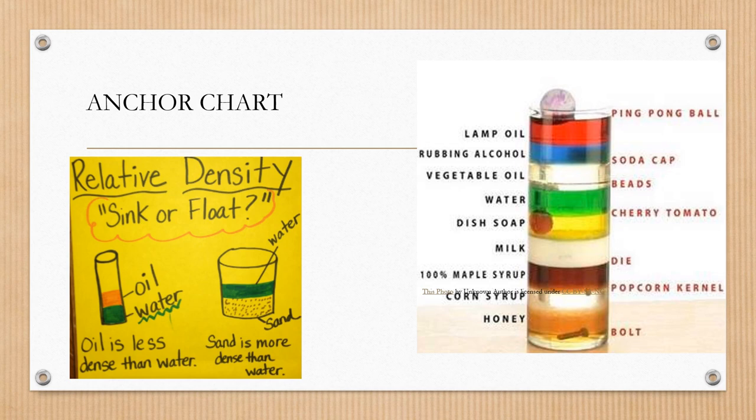If it's floating, it will have less density than water. The example to the left says oil is less dense than water. How do I know this? Because the oil is on top of the water, it is floating. Sand is more dense than water. Sand has a higher density because it is sinking.